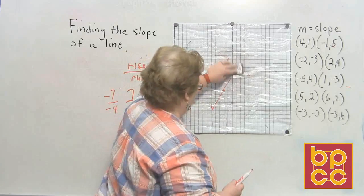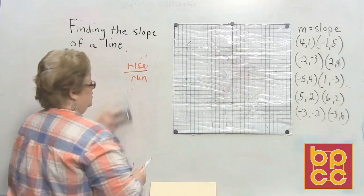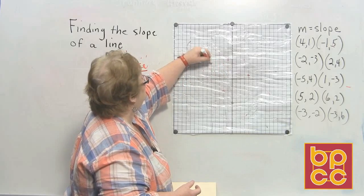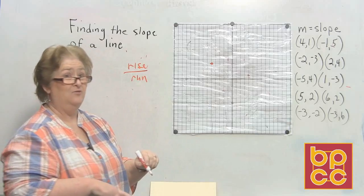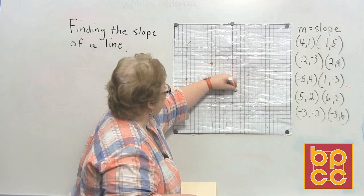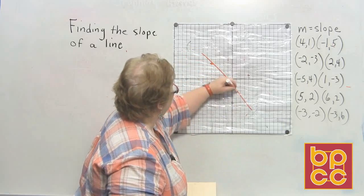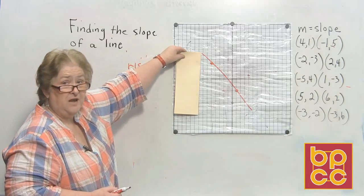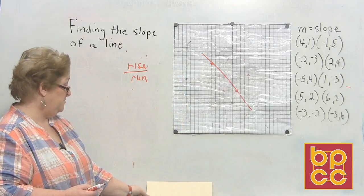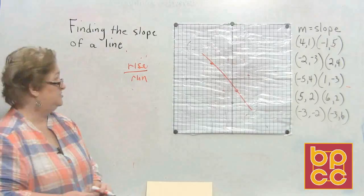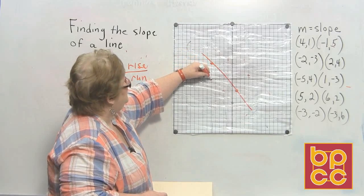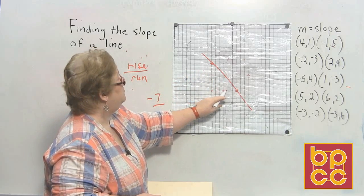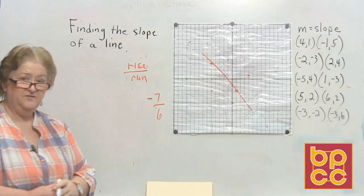Let's try the third one now. Going to negative five, up four — first point. Then positive one, down three — second point. Drawing the line: it's going downhill, so one of the numbers has to be negative. Starting here, going down seven — that's negative seven — then to the right six. The slope is negative seven over six.